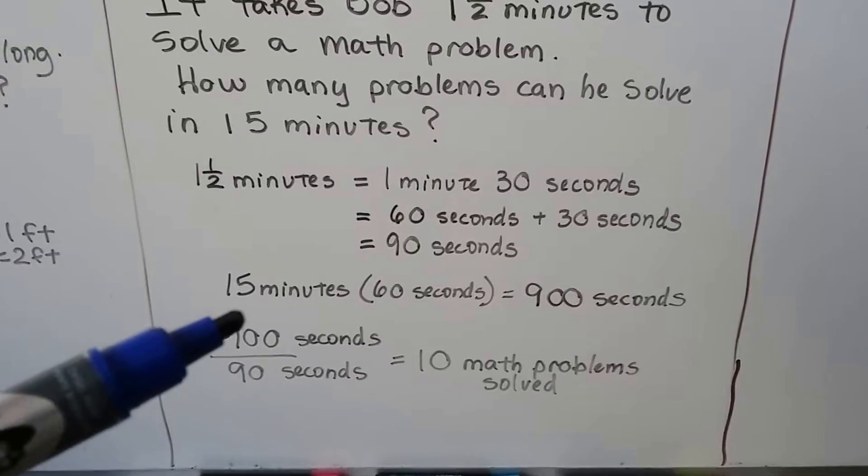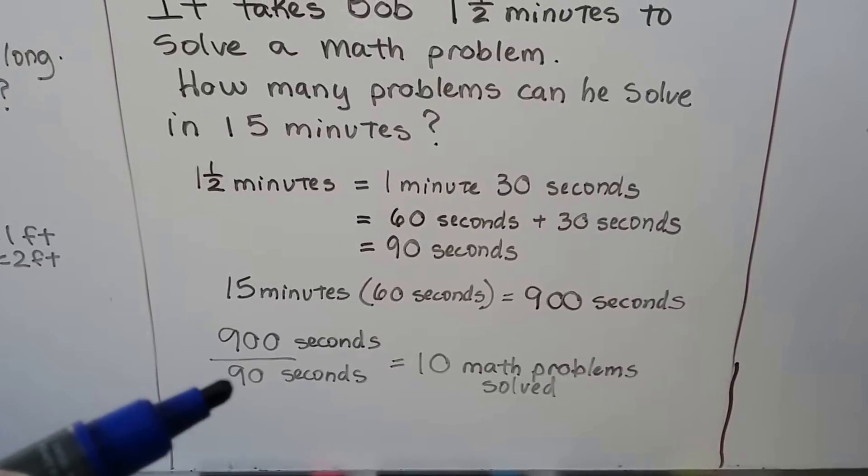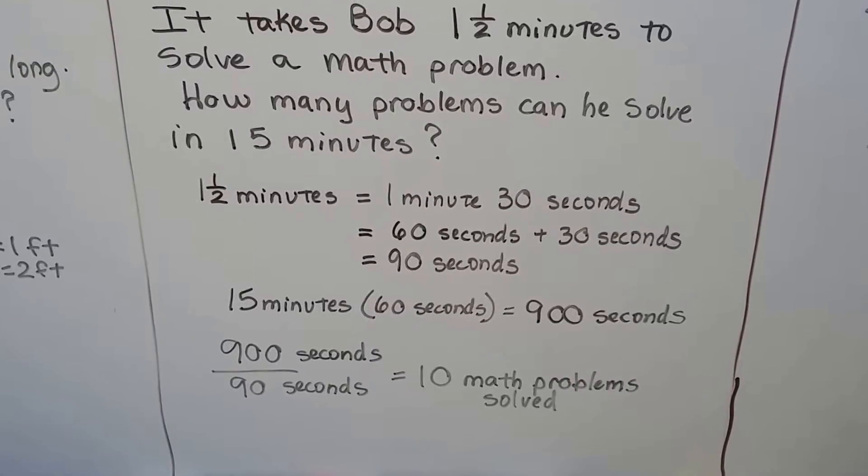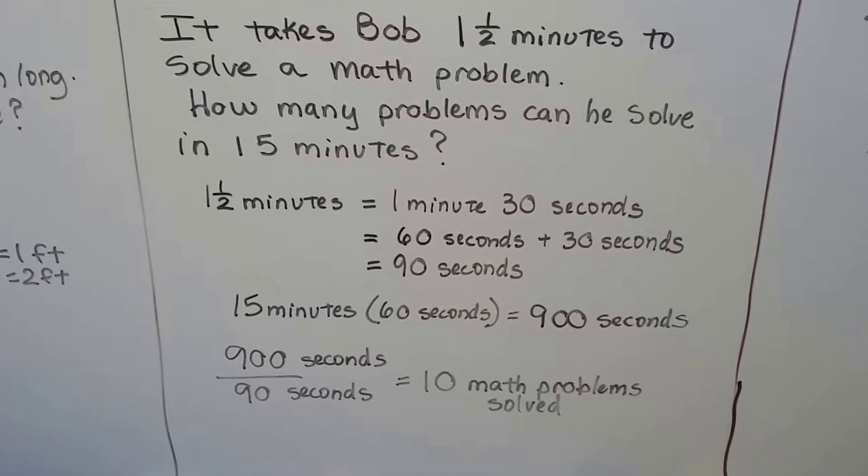These 15 minutes times 60 seconds will give us 900 seconds. We can split this up by the 90 seconds divided by the 90 seconds. 900 seconds divided by 90 seconds is 10. So that means he can do 10 math problems in 15 minutes.